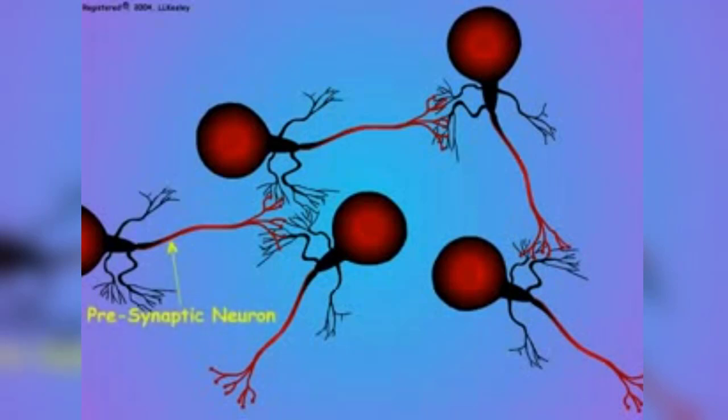A synapse consists of a presynaptic neuron that brings in the information signal, the synaptic junction where the information is transferred from the presynaptic axon to the dendrite of a postsynaptic neuron, and the postsynaptic axon that carries the information away to other neurons.